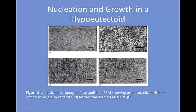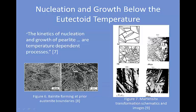Pro-eutectoid cementite forms instead of pro-eutectoid ferrite in a hyper-eutectoid alloy; otherwise, it acts the same as the ferrite as far as nucleation and growth are concerned. At low eutectoid temperatures, as mentioned, pearlite forms in lamella that form spheres to be at the lowest energy possible, and this will form at moderate levels of undercooling. At extreme levels of undercooling, requiring quenching the material, martensite — a completely different phase — may form.